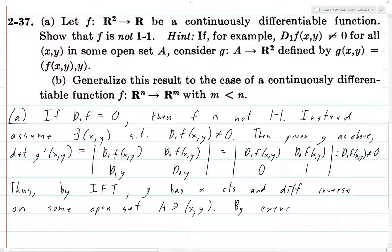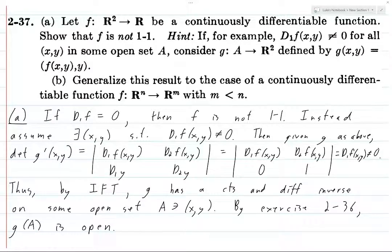By exercise 2-36, the previous exercise, g(A) is open. So that's actually the only reason we need the inverse function theorem here. We're not doing anything with this continuous and differentiable inverse of g. All we're doing is we're using the previous exercise to show that we have the image of A being open.